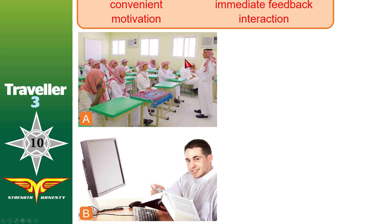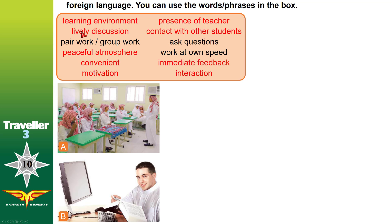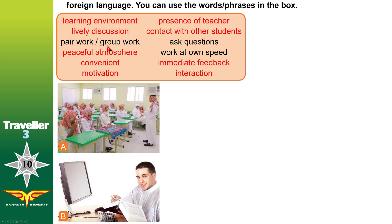We'll compare learning a foreign language in a classroom — with fellow students and a teacher — versus learning at home through self-study, with just books, internet access, and a computer. Key terms: learning environment means everything around you in the place where you study; presence of a teacher; lively, active, and energetic discussions; contact with other students; pair work — two students working together; group work — three, four, or five students working together.